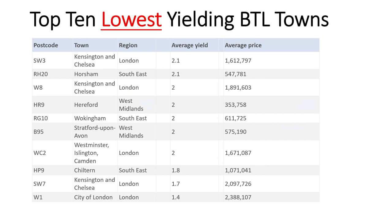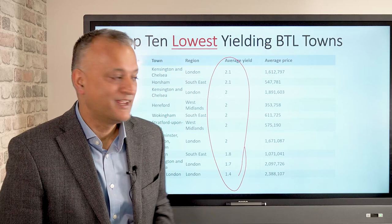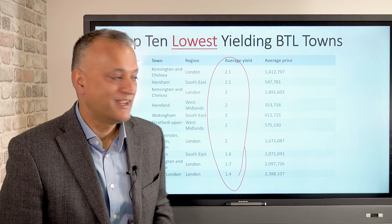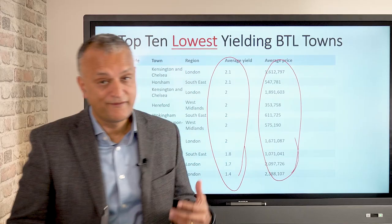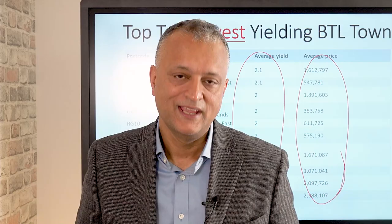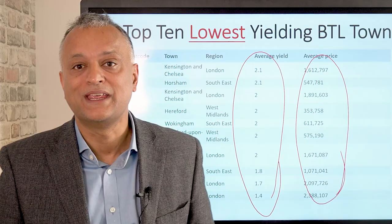Here are the top ten lowest yielding places to do buy-to-let in the UK. The yields are abysmal — in fact, they're not even inflationary, really. So where are your returns going to come from? Your returns are going to largely come from the fact that in higher value areas, the capital appreciation tends to be higher. But in all honesty, neither of these top ten towns are the ones that you should be investing in, because they are both at the extremes.